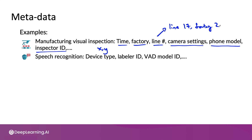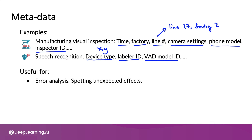One more example: for speech recognition, if you have audio recorded from different brands of smartphones, save that in advance. Or if you have different labelers labeling your speech, or if you use a voice activity detection model, keep track of what version number of the voice activity detection model you used. All of this means that in case one version of the VAD voice activity detection system results in much larger errors, this significantly increases the odds of your discovering that and being able to use it to improve your learning algorithm's performance. To summarize, metadata can be very useful for error analysis and spotting unexpected effects or categories of data that have unusually poor performance.